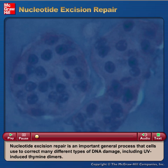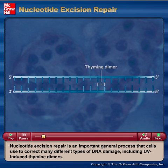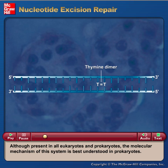Nucleotide excision repair is an important general process that cells use to correct many different types of DNA damage, including UV-induced thymine dimers. Although present in all eukaryotes and prokaryotes, the molecular mechanism of this system is best understood in prokaryotes.